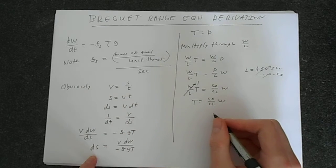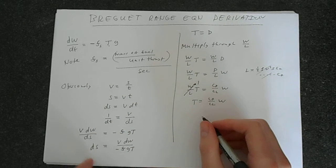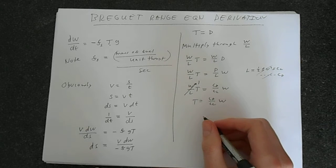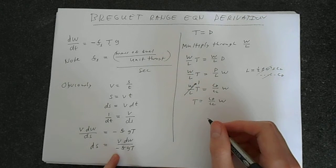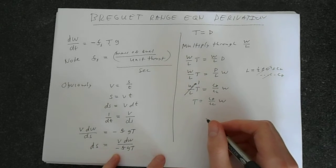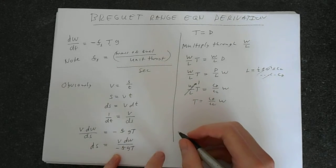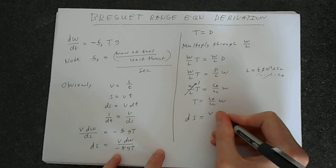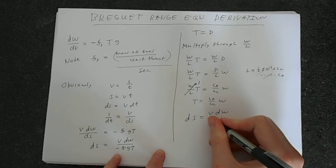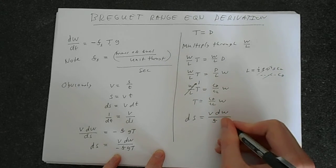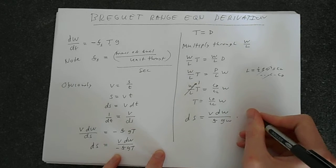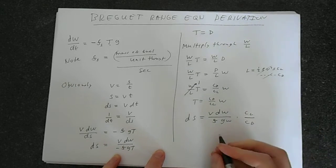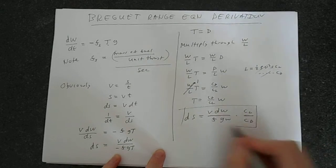We have an important result down here. So we can play around with this. By manipulating this, we'll get the result that dS equals v dW over f g W times c_l over c_d.